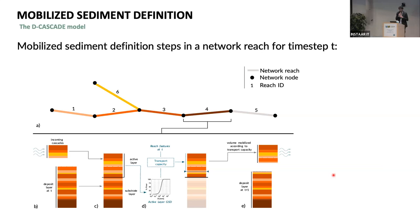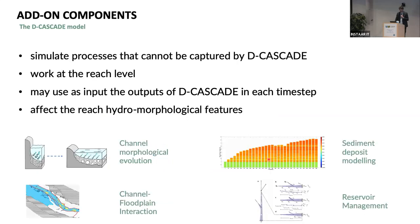Here you see a simplification of what happens inside D-CASCADE in each time step. For reach number four, the color represents the provenance of the material. We have the incoming cascade volume, then calculate the transport capacity, and then calculate a new volume to be carried downstream in the next time step. Since this is a simplistic representation of sediment transport, we introduced add-on components — components that work at the reach level and account for processes more difficult to represent in a 1D structure — allowing a flexible modeling environment where more data enables more complexity.